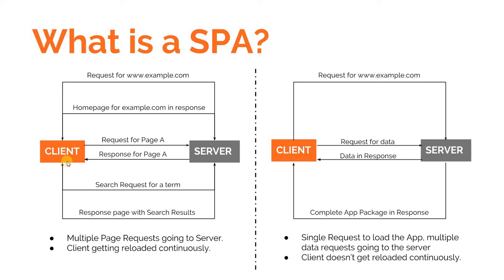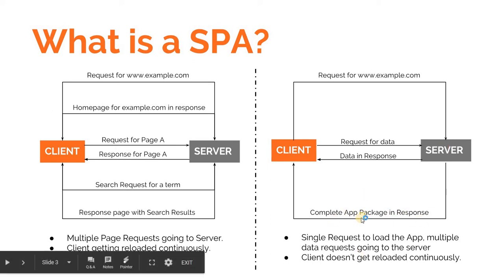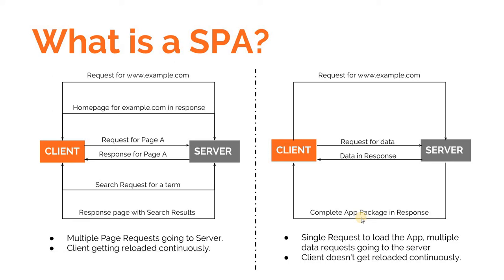Now if example.com was a single page application, as can be seen here, only a single request would go to the server to fetch the example.com website. The server, instead of responding back with just the home page, would respond back with a complete application package. This complete application package contains everything needed to run the whole example.com as a single page application — all the JavaScript, all the templates which are called views, and all the basic logic required to run the whole website as a single page application.